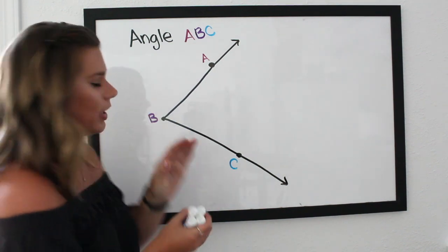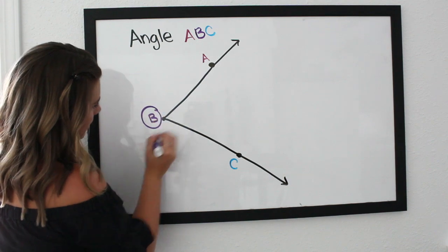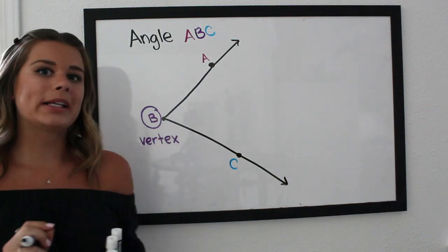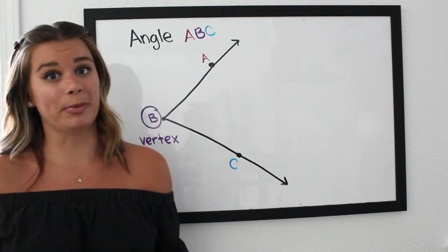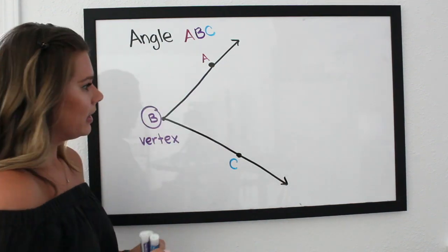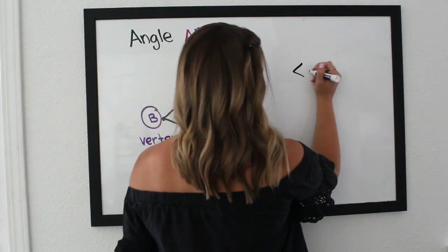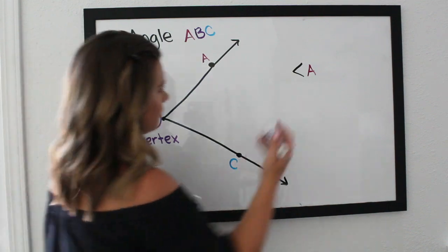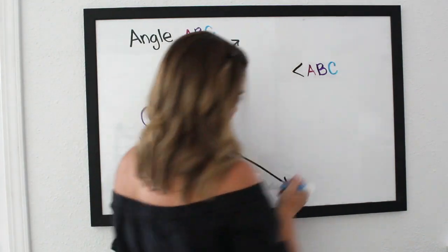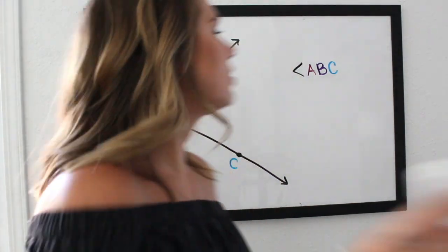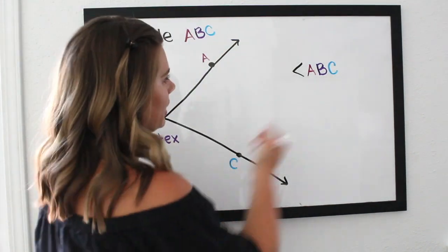The middle letter is always your vertex — that center point where the angle opens up. So B is our vertex here. Symbolically, instead of writing out the word 'angle' every time, we draw a little angle symbol followed by the letters ABC. And again, order matters — the middle letter must always be the vertex.